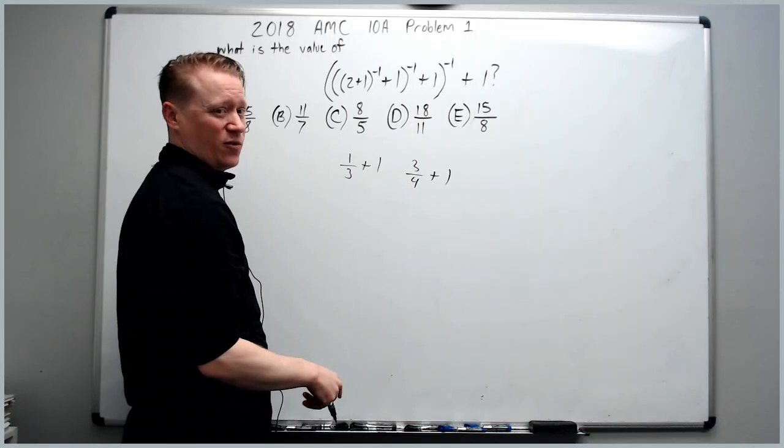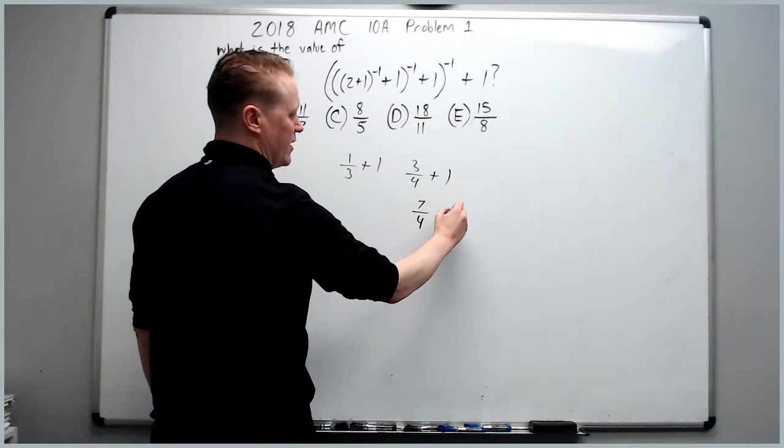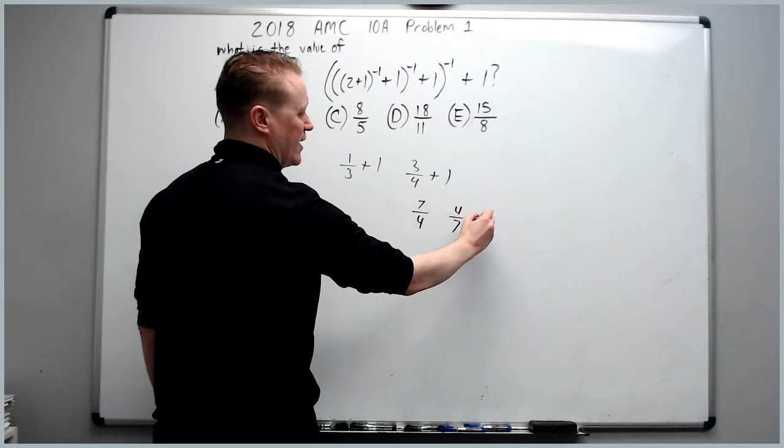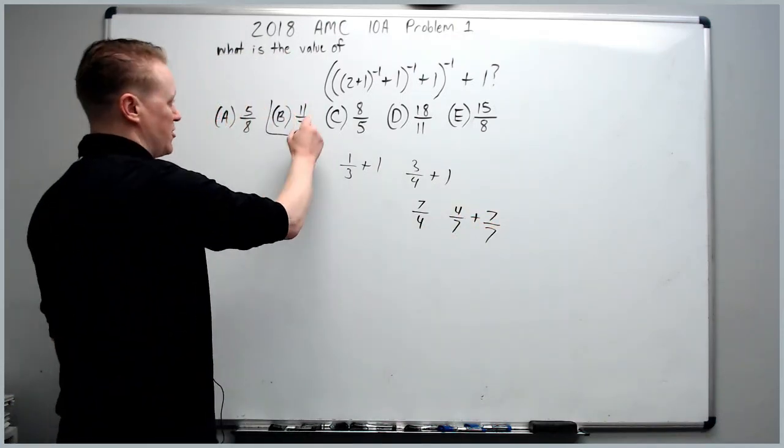To the negative one is three fourths. Again, mentally converting this one to four fourths to get seven fourths. To the negative one is four sevenths. And finally, plus one, which you think of as seven sevenths, gives answer choice B.